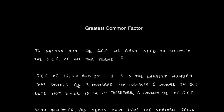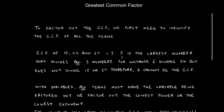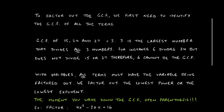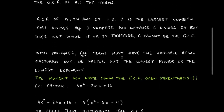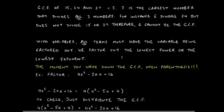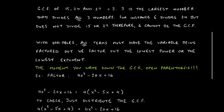To factor out the GCF, the first thing we need to do is identify what the GCF is. The easiest way to explain this is with an example you've done since middle school. The greatest common factor of 15, 24, and 27 is 3, because 3 is the largest number that divides all three numbers.